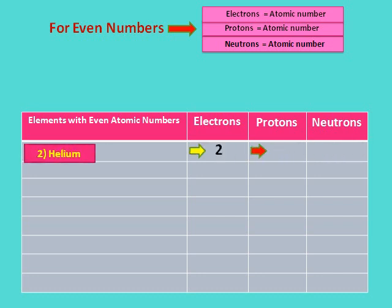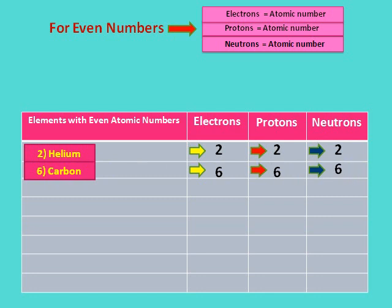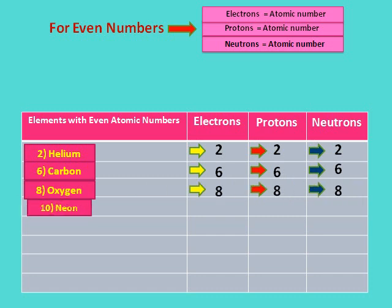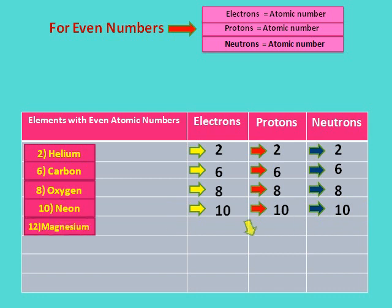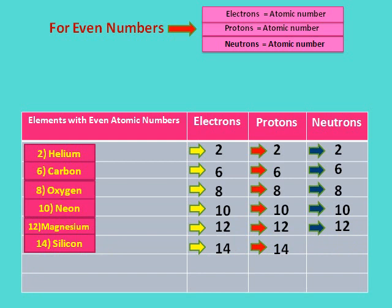In helium: 2 electrons, 2 protons, and 2 neutrons. In carbon: 6 electrons, 6 protons, and 6 neutrons. In oxygen: 8 electrons, 8 protons, and 8 neutrons. In neon: 10 electrons, 10 protons, and 10 neutrons. In magnesium: 12 electrons, 12 protons, and 12 neutrons. In silicon: 14 electrons, 14 protons, and 14 neutrons.